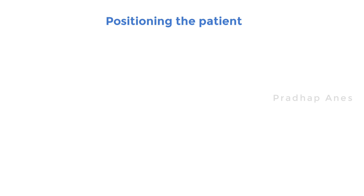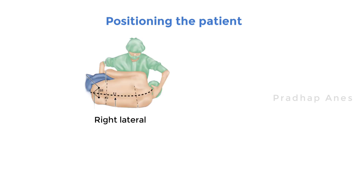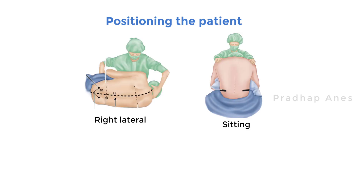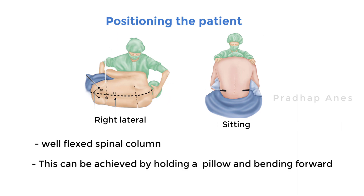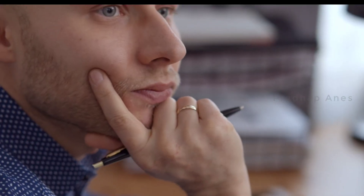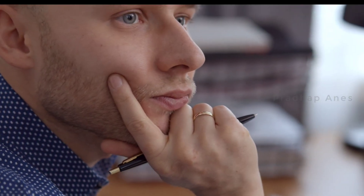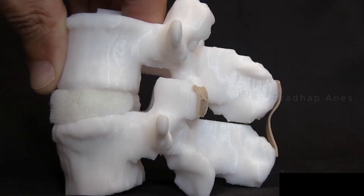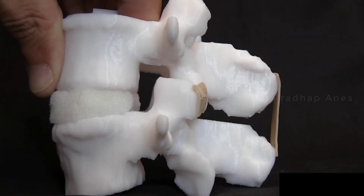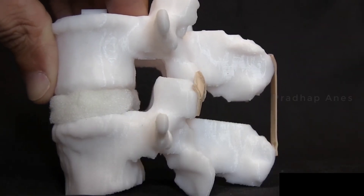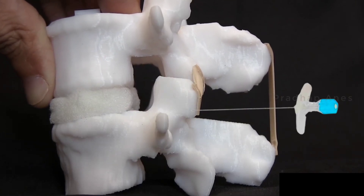Position the patient. The patient should be placed in a right lateral or sitting position with a well-flexed spinal column. This can be achieved by holding a pillow and bending forward. These positions help to open up the spaces between the bones in the back so that the needle can easily pass through the structures.